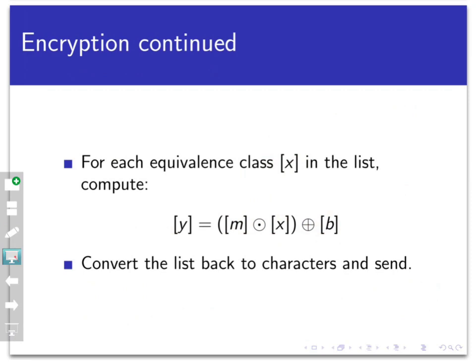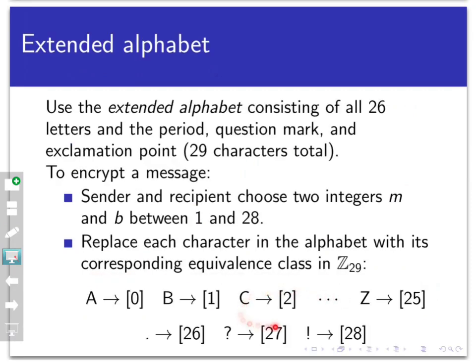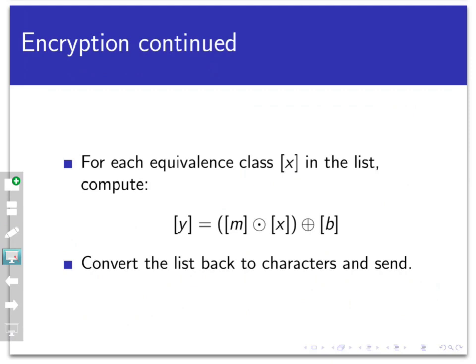So I'm taking each character in the message, converting it to an equivalence class, and performing this modular arithmetic mod 29 operation upon it. That's going to give me a string of new equivalence classes, all of which are somewhere in Z29 — either the class of 0, class of 1, all the way up to the class of 28. That means I can convert the list back to characters by going backwards through my replacement process, and that list of characters is the encrypted message.